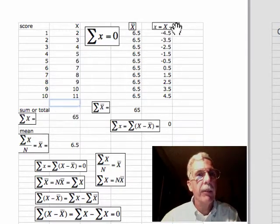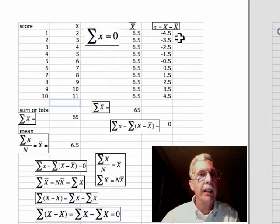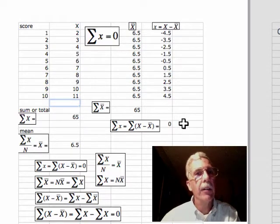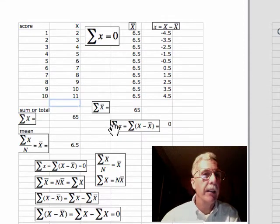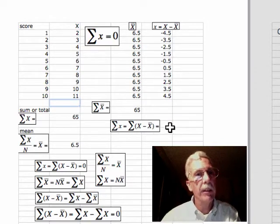Now, if we take the scores and subtract the mean, the first one would be 2 minus 6.5 would give us minus 4.5. And we do that once for each score, we wind up with the sum of 0. And that says that the sum of the deviations from the mean is equal to sum of x minus x-bar is equal to 0.